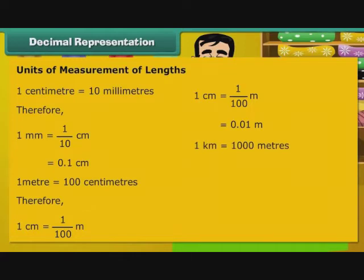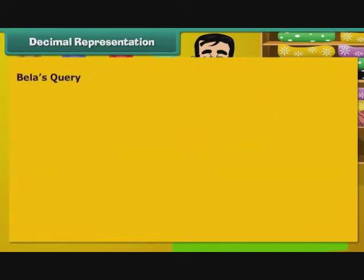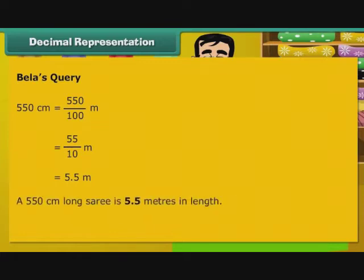1 km is equal to 1000 m. Therefore, 1 m is equal to 1 by 1000 km, that is 0.001 km. Now, let us turn our attention to Bela's question. 550 cm is equal to 550 by 100 m, that is 55 by 10 m, that is 5.5 m. A 550 cm long saree is 5.5 m in length.